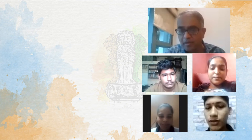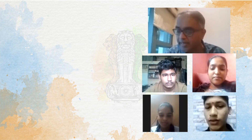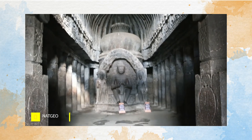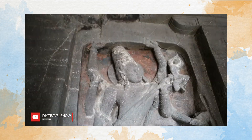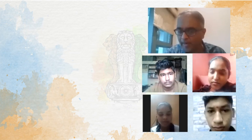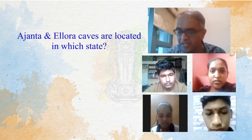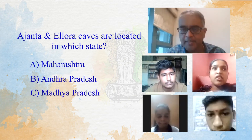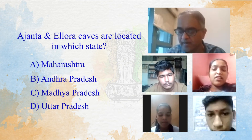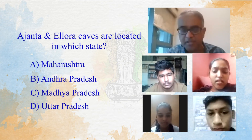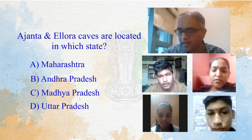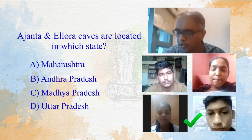The next question goes to team Swadesh, Sneha and Nishant. What you're seeing are the caves — Ajanta and Ellora. Which state of India are these caves in? Is it Maharashtra, Andhra Pradesh, Uttar Pradesh or Madhya Pradesh? Sneha answered: Maharashtra. Absolutely correct — you get 10 points.